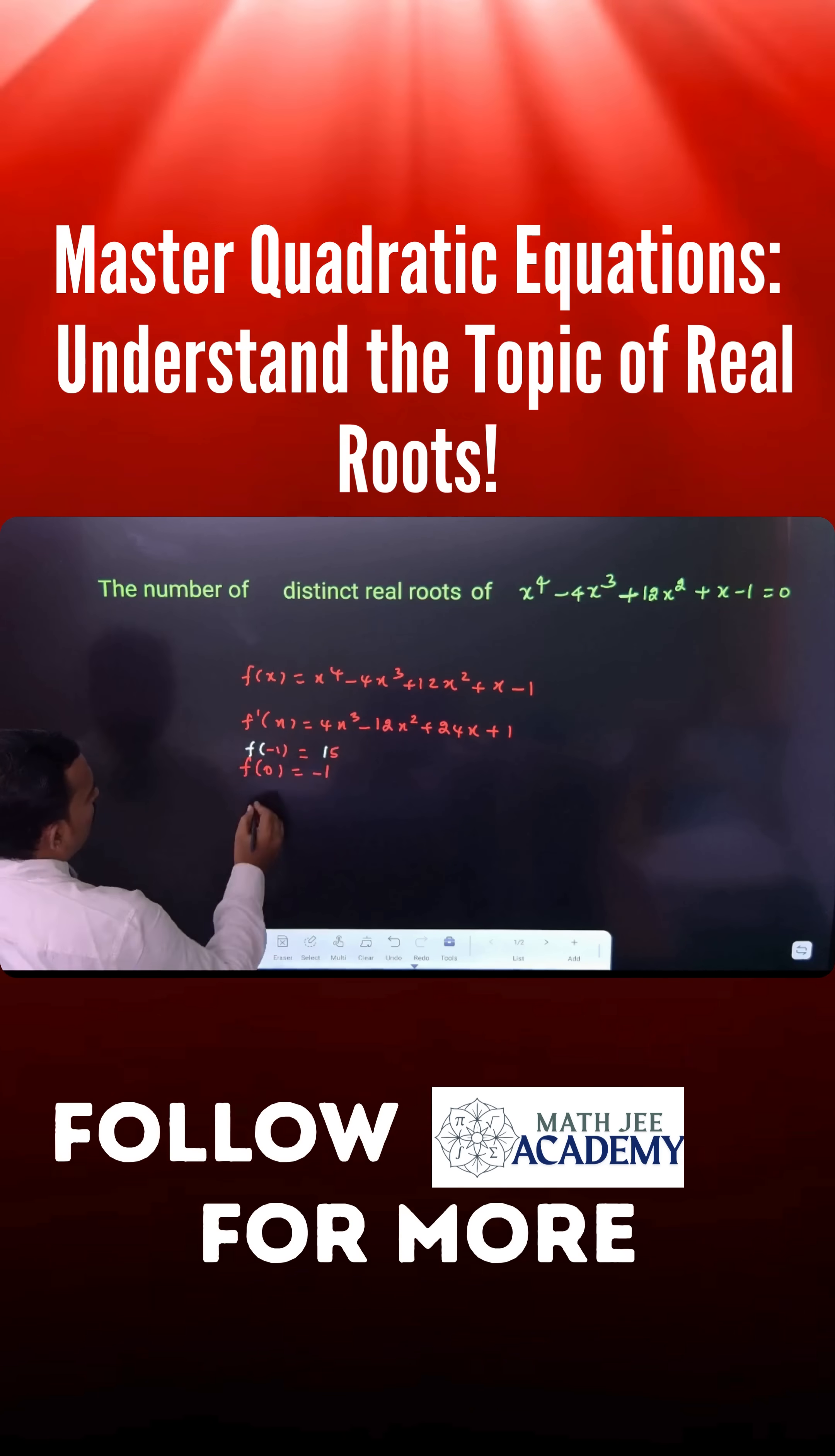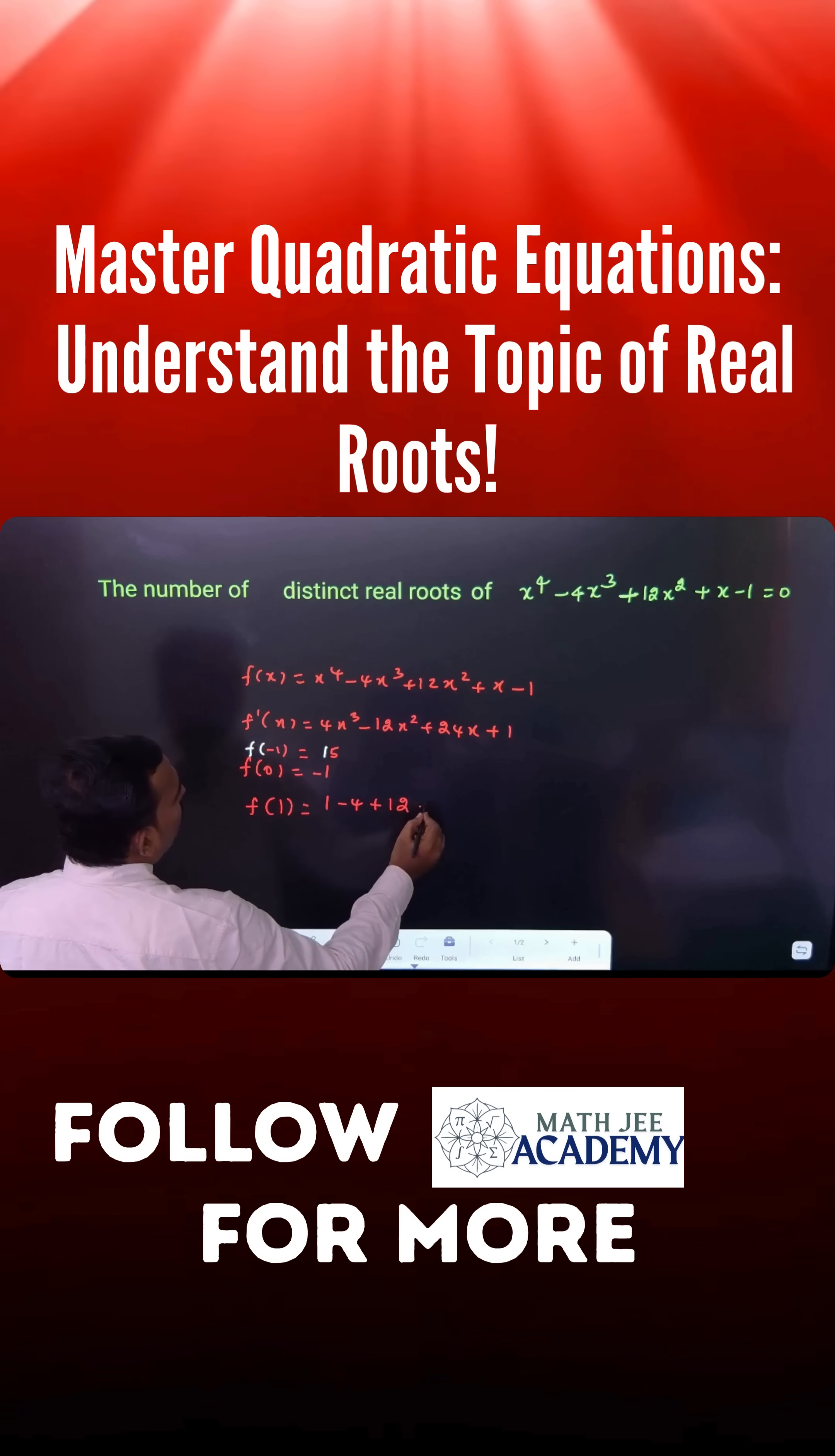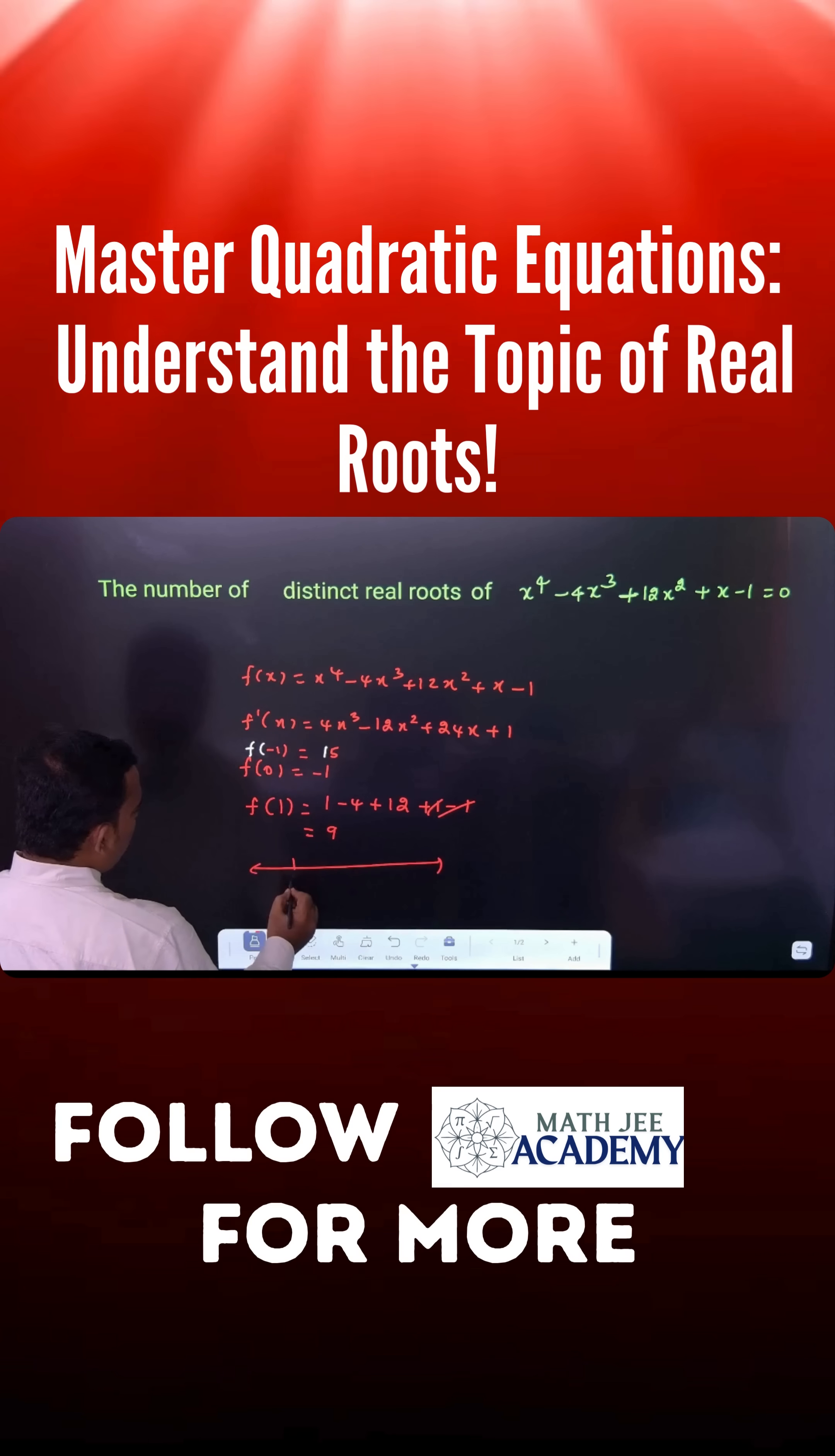Just substitute f(1): 1 - 4 + 12 + 1 - 1. That means 1 minus 1 cancels. 12 plus 1 is 13 minus 4, which is 9. So we have the values at -1, 0, and 1.